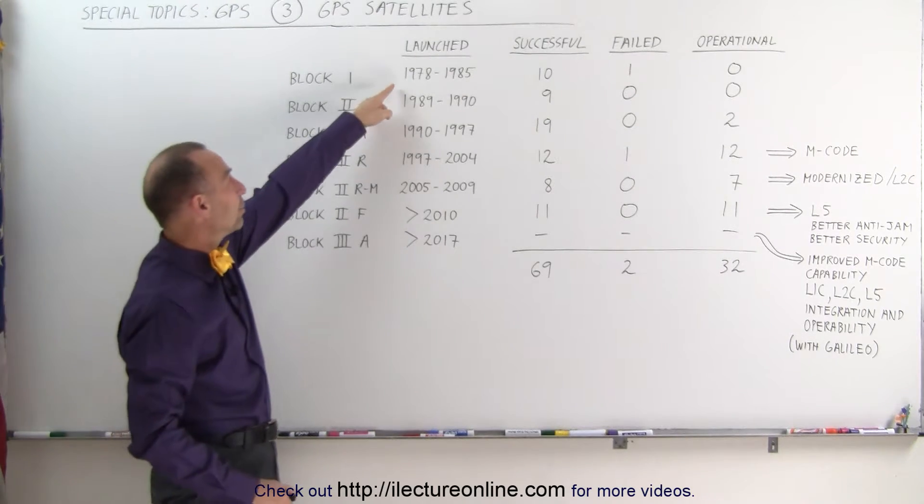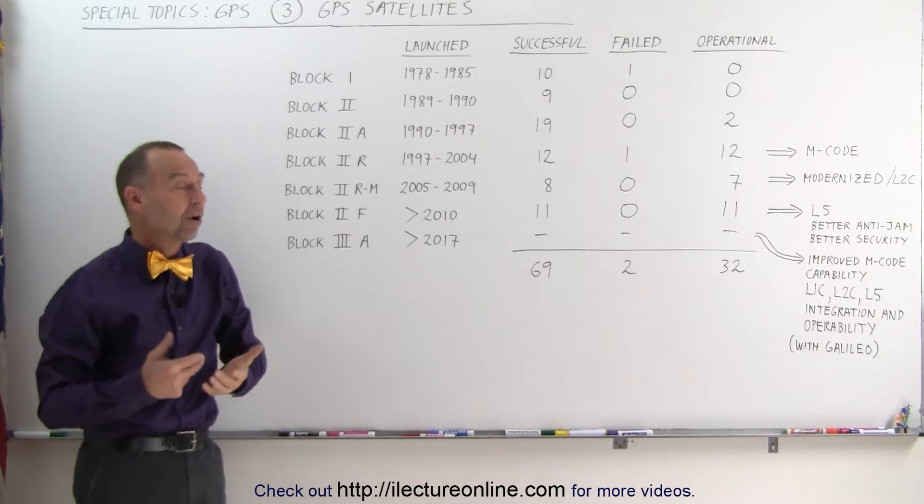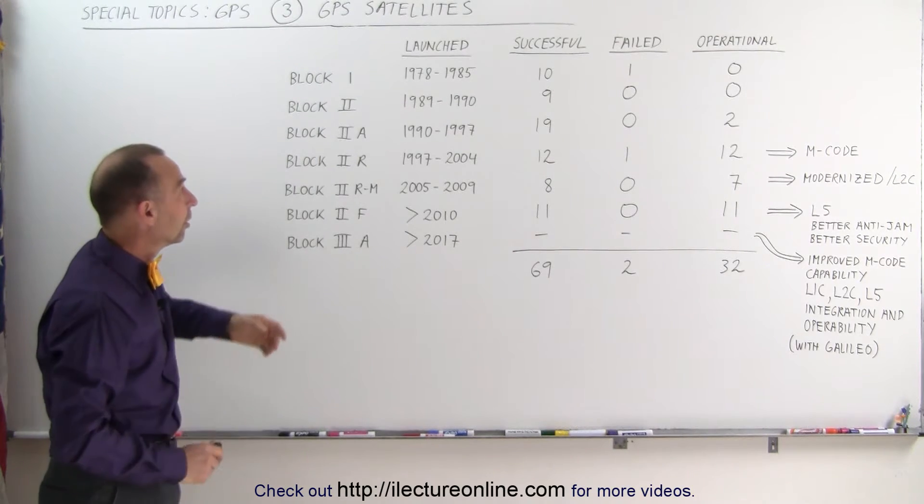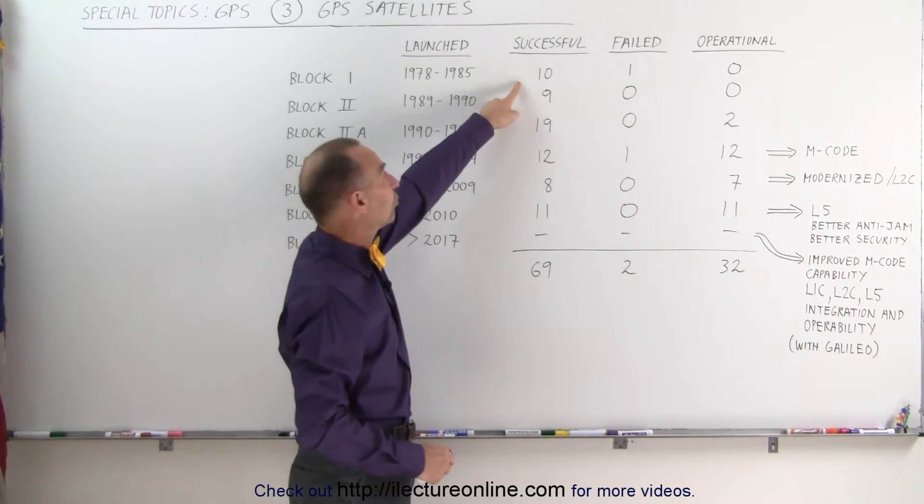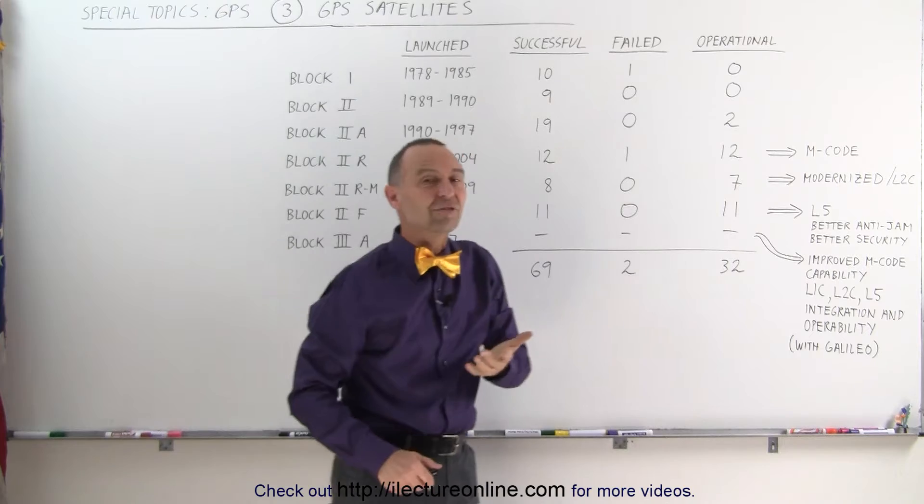Starting out in 1978 we started putting what we call Block I satellites up in space for the purpose of providing GPS service. There were 10 successful launches, one launch that failed, and at this moment there's none of those left operational.